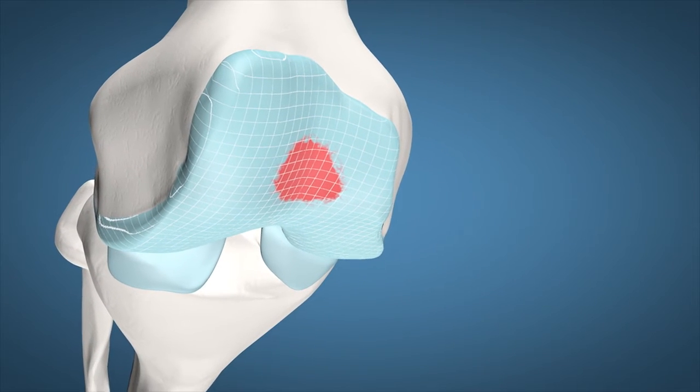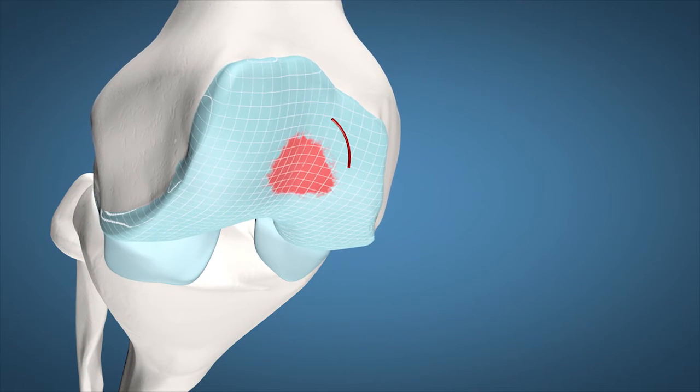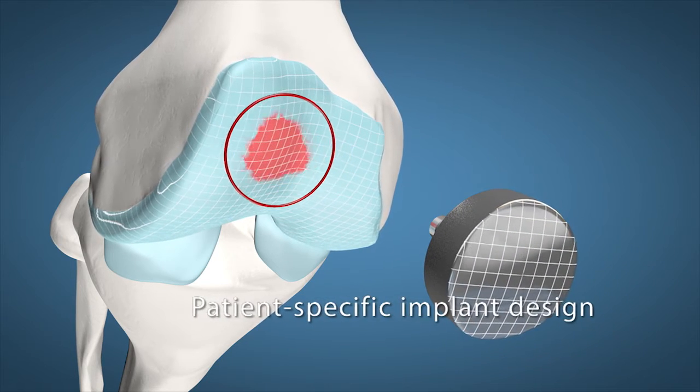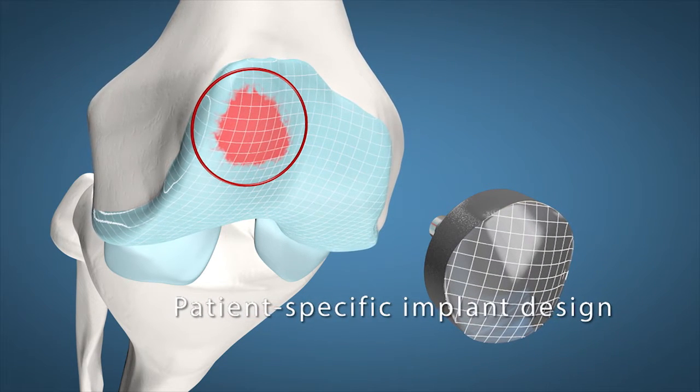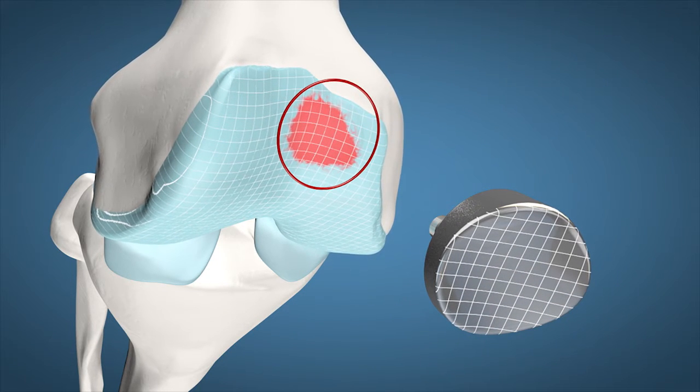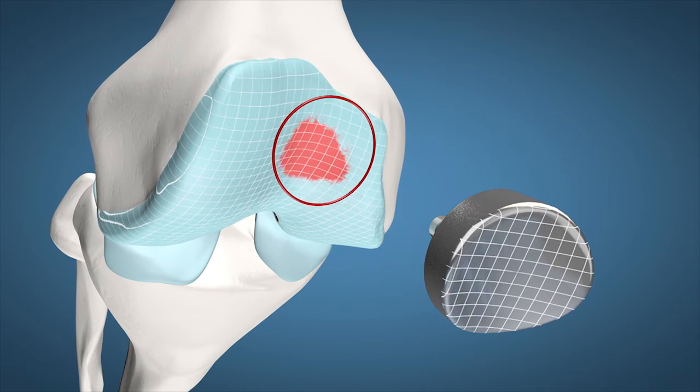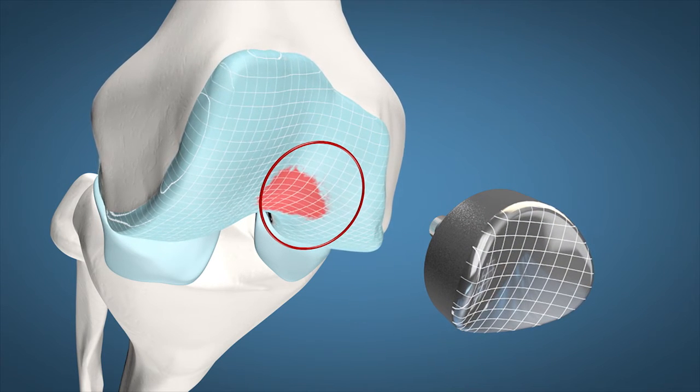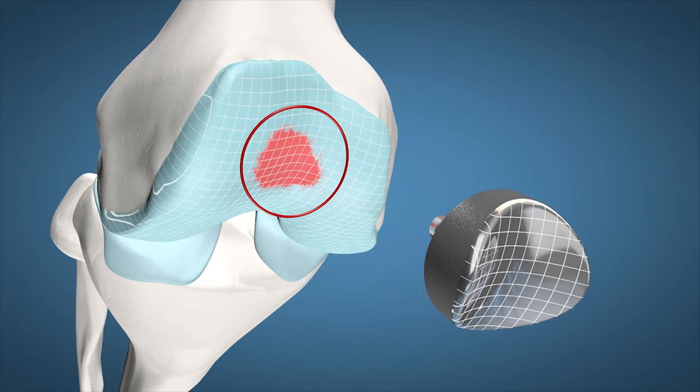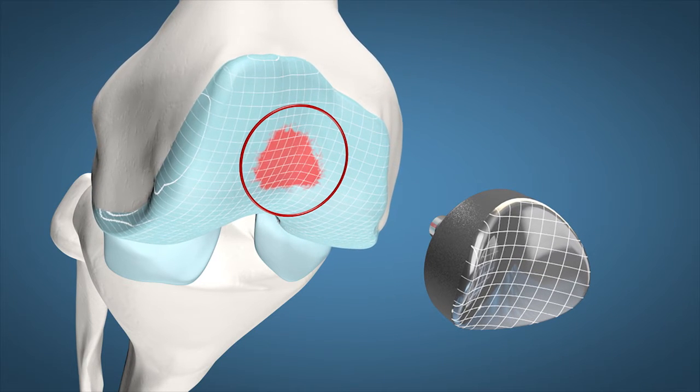An individualized EpiSurf implant is designed based on patient-specific computer images obtained by a magnetic resonance camera. This means that the implant shape and surface is customized to each patient's knee anatomy and, independent of the cartilage lesion location, size and depth, a smooth and continuous joint surface can be recreated.